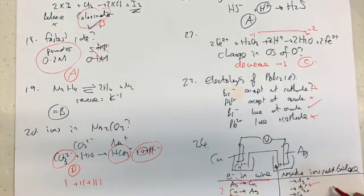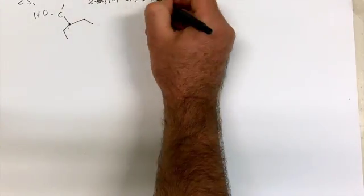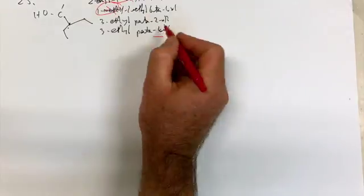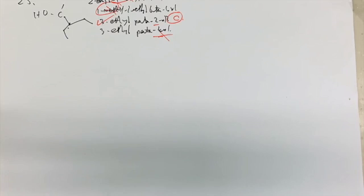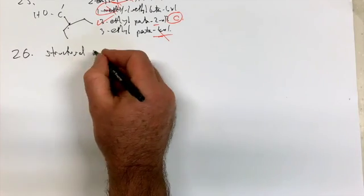And 24, electrons go to silver, and the ions and the salt bridge go towards Ag plus. Named compound, drawn better in the paper than on my desk. You can ignore anything that says 1-methyl, because that's just wrong. The answer is C, 3-ethyl-pentin-2-ol.